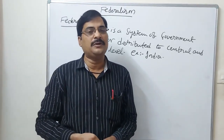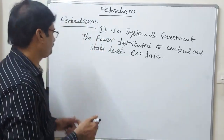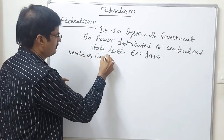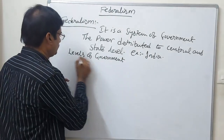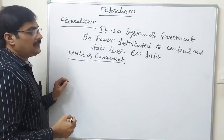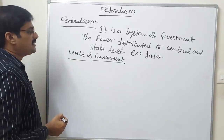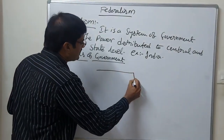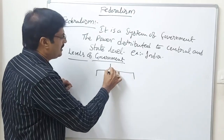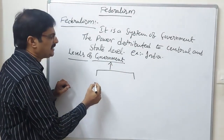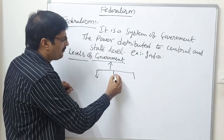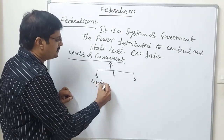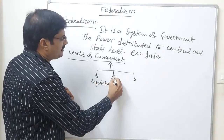First, we have to discuss the levels of government. There are horizontal and vertical types of government. The horizontal type of government is divided into three types: legislative, executive, and judiciary.